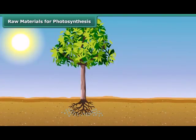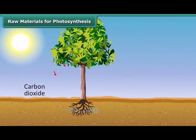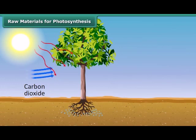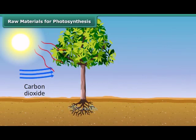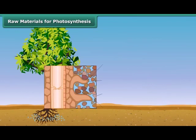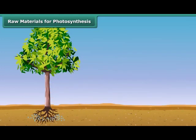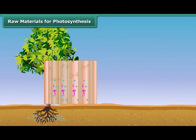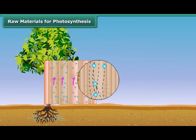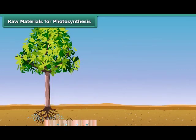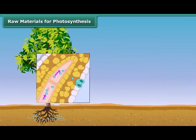In plants, water, minerals, and carbon dioxide are raw materials for the synthesis of food. Water and dissolved minerals are absorbed directly from the soil through roots and sent to the leaves by means of many small vessels present in the stem. These vessels run throughout the root, the stem, the branches, and the leaves, forming a continuous path for water and minerals to reach the leaf.